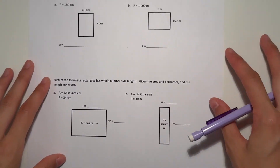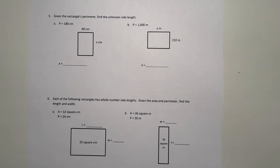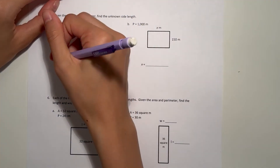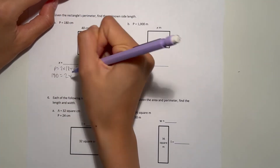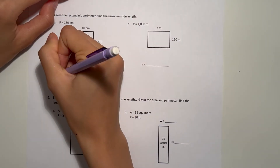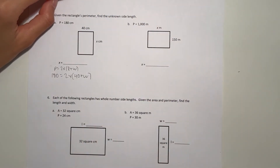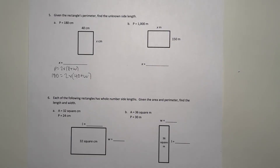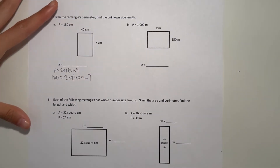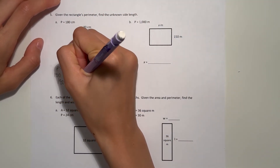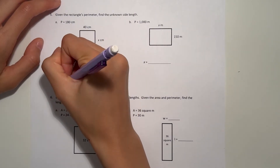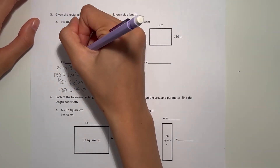Given the rectangle's perimeter, find the unknown side length. Our perimeter is 180 centimeters. Perimeter equals 2 times length plus width, so 180 equals 2 times 40 plus W. 40 plus 40 is 80, and we need 100 more to get to 180, so 100 divided by 2 is 50. If W is 50, then 40 plus 50 is 90, and 2 times 90 is 180. So our missing side length is 50.